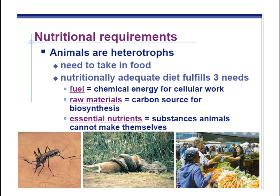A car needs gasoline, otherwise it doesn't go anywhere, and animals need fuel as well. That fuel that drives a lot of the processes inside the animal is ATP. That ATP is made by cell respiration, and we need to make that ATP from the chemical energy found in food — the stored chemical potential energy between the atoms within molecules.